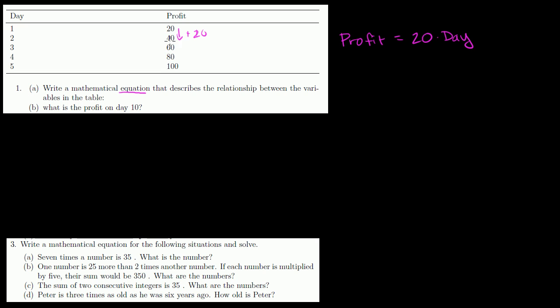Let's see. You could try it with all of them. But when the day is 5, 20 times 5 is 100. Yeah, it looks like it actually fits the data. And if we wanted to write it a little bit more algebraically, we could say that profit is P and day is D. And we would write our equation as profit is equal to 20 times D or 20D. So that's part A. I wrote a mathematical equation that describes the relationship.